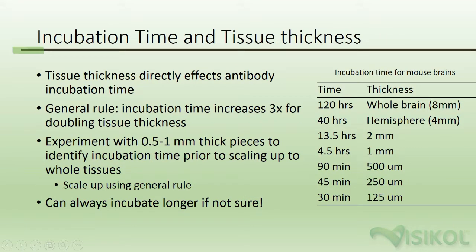Incubation time and tissue thickness. Tissue thickness directly affects antibody incubation time. As a general rule of thumb, incubation time increases three times for each doubling of tissue thickness. Experiment with half a millimeter to 1mm thick pieces to identify incubation time prior to scaling up to whole tissues. You can always incubate tissues longer in antibody solutions if you're not sure of the proper time.